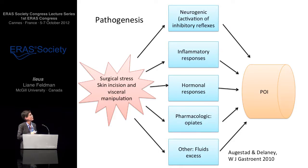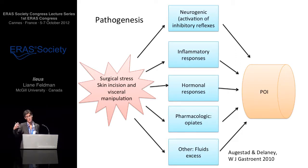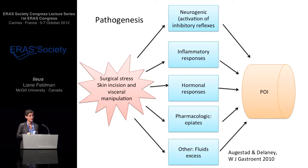The initiating stimulus is surgical incisions and manipulation of the viscera. Important pathways include sympathetic inhibitory reflexes — one of the strongest mechanisms in postoperative ileus — inflammatory responses both systemic and local at the level of the bowel wall, involving macrophages, mast cells, and neutrophils. Hormonal responses — both systemic and enteric GI hormones — play a role, as do endogenous and exogenous opiates, and excess fluids contributing to bowel wall edema.